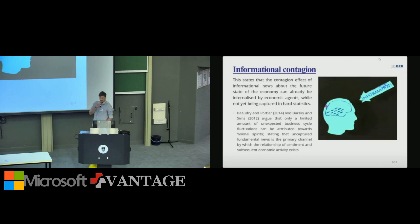The other one is called informational contingent. They call it the news effect, but I like to think about it as informational contingent. So there's this idea that economic agents have already internalized everything about the economy around the braai, reading the newspaper. But it's not yet reflected in the hard statistics, just purely due to the frequency. So you can see that the study that we're following is this ideology.